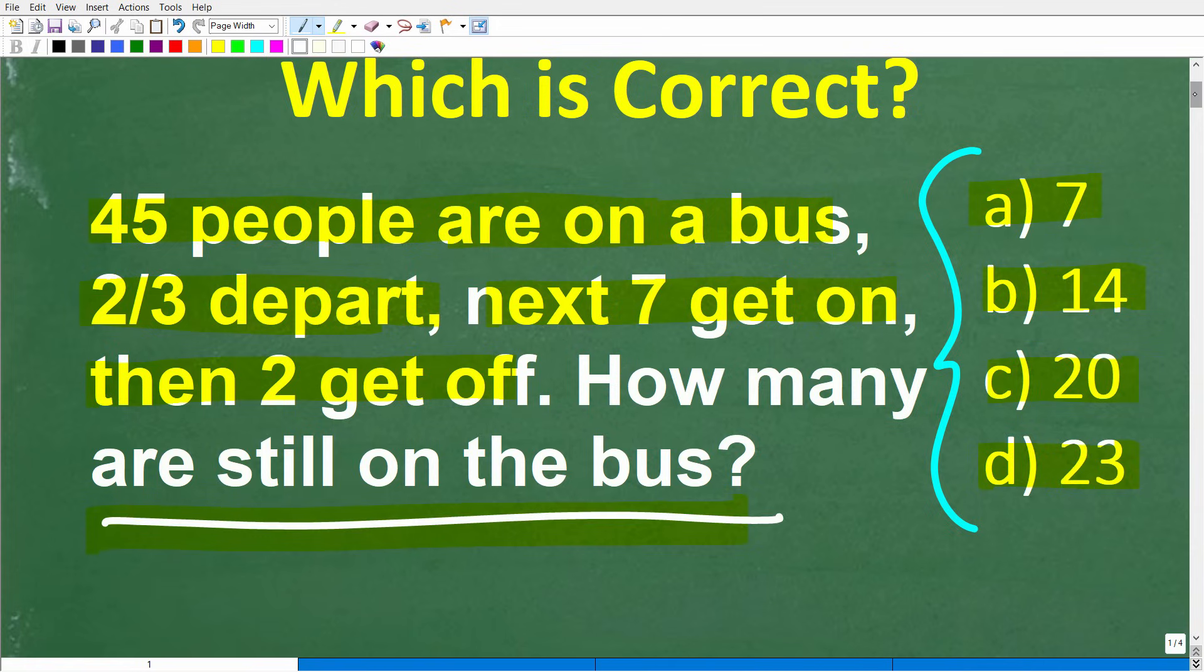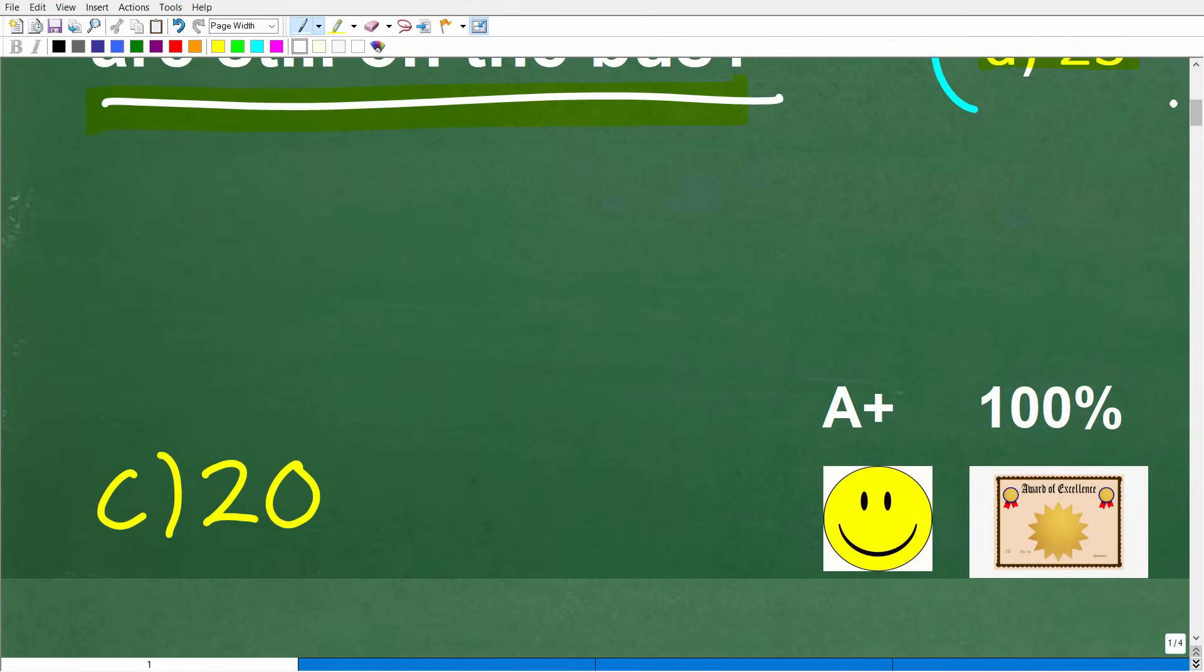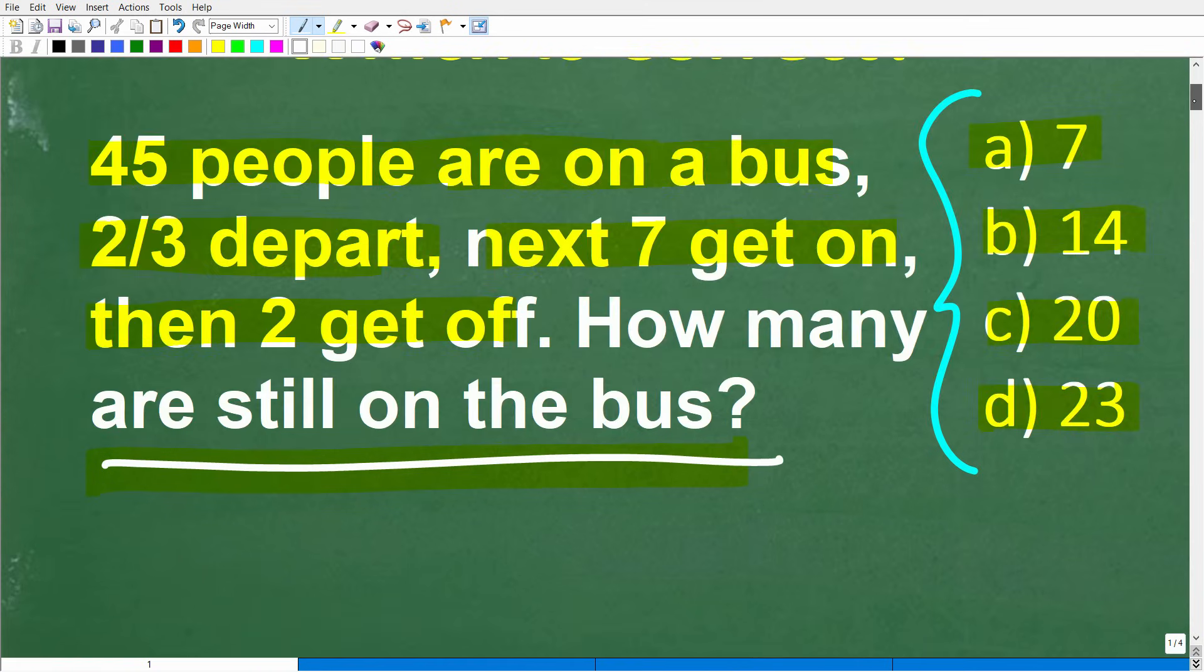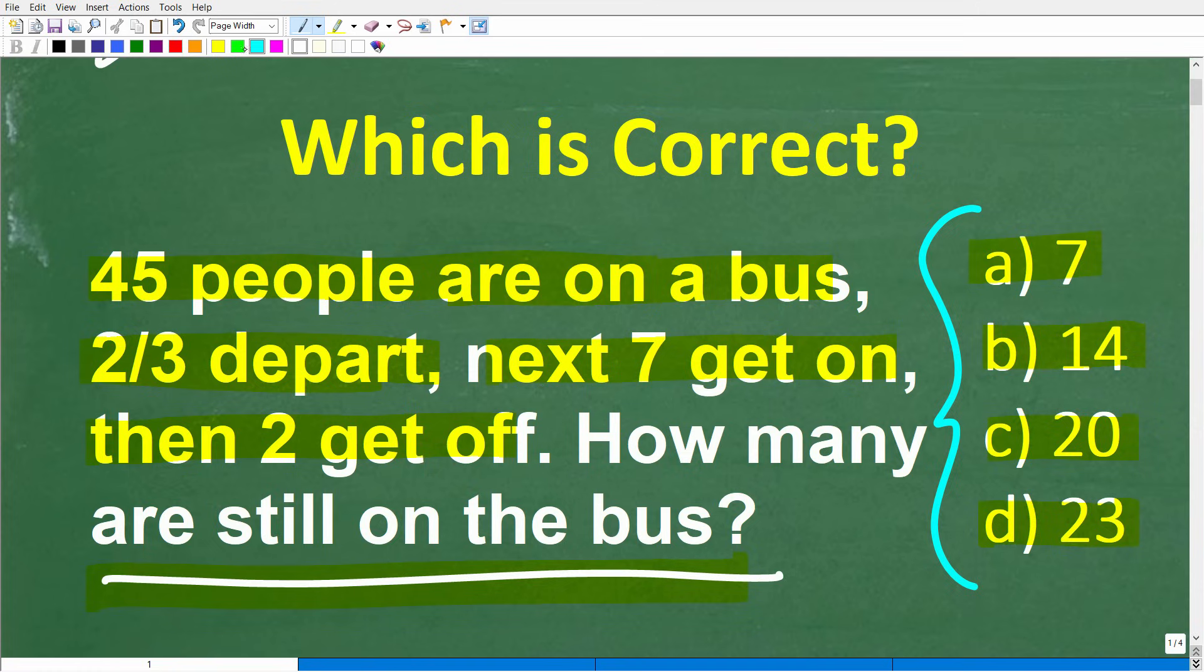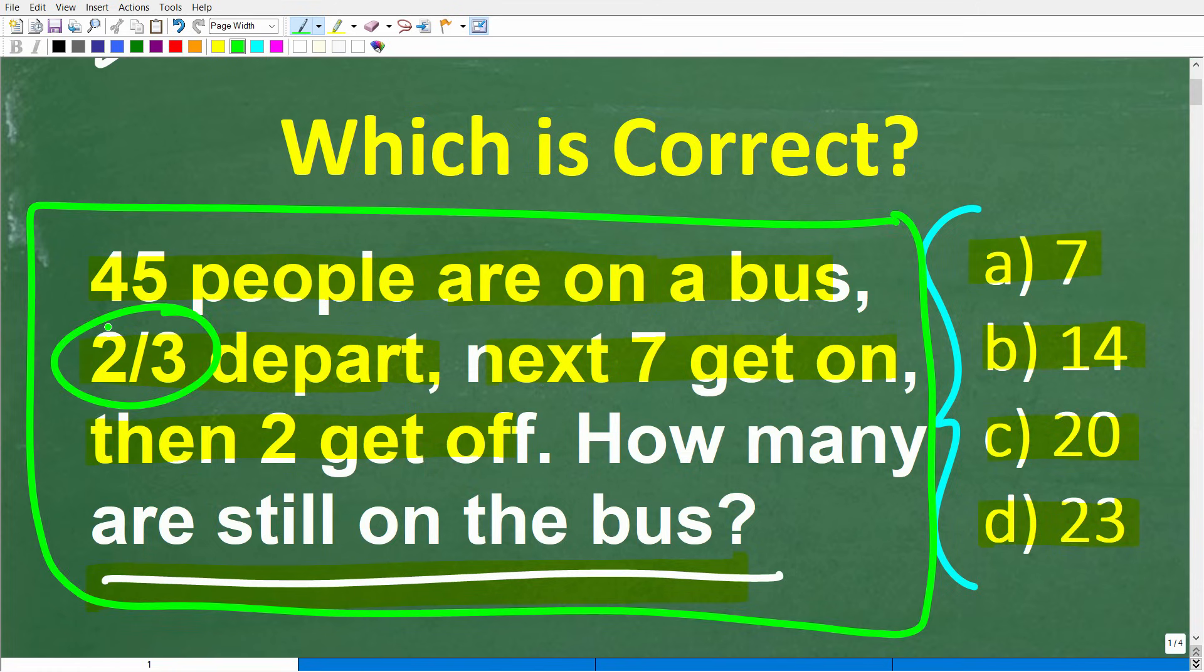Well, let's take a look at the right answer. The correct answer is C, 20 people. All right, now if you got this right, you definitely get a happy face, an A plus, a 100% and a certificate of excellence in your achievement in solving a basic math word problem that involves fractions.